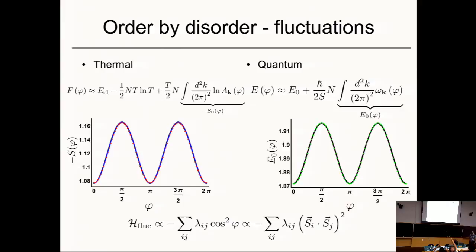The dots are the numerics and the curve is just the fit, because I can't do this analytically — I have to do this integral numerically and just fit with cosine-squared. The spectra are similar but look: in the classical case you just have the log of the Hessian matrix, while here you have the full spectra. In principle those could give rise to different selection, but in this simple model they agree — though that does not need to be the case in general.